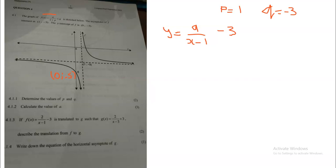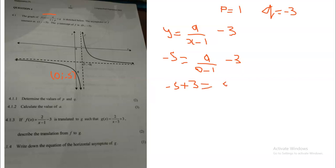Now I must use the coordinate (0, negative 5). The y-value is negative five, so I substitute: y equals negative five, then a over x — x is zero — so it's a over zero minus one, minus three. So negative five equals a over negative one, minus three. The negative three comes to the other side and changes sign, giving negative five plus three equals a over negative one.